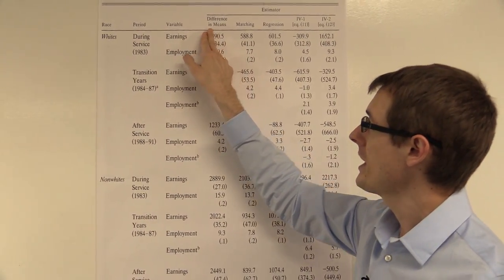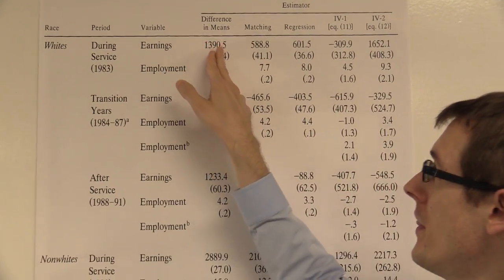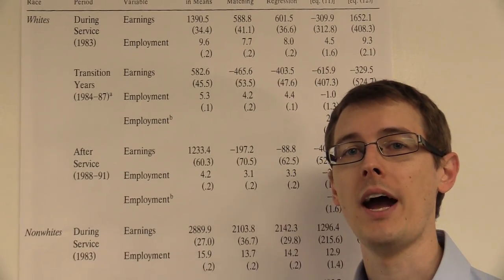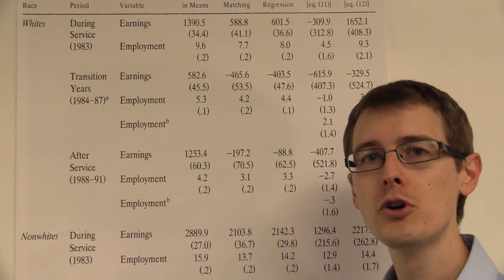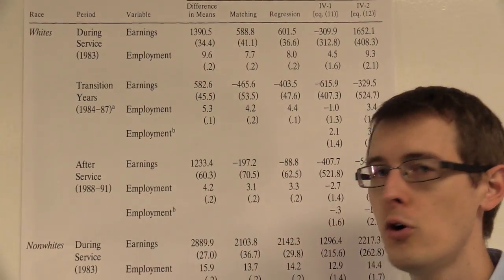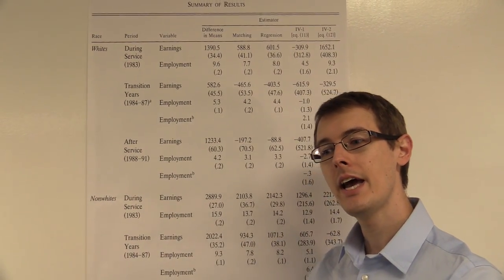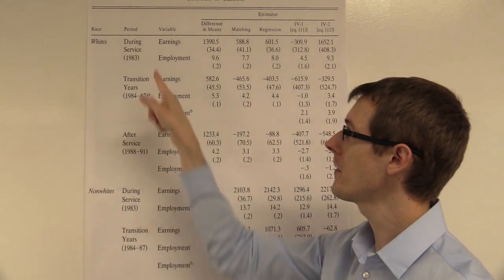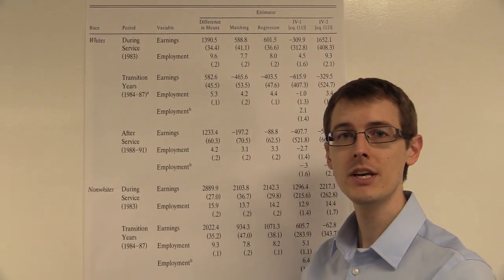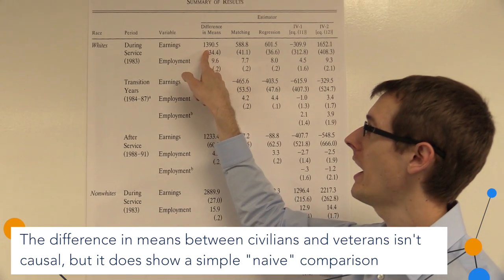So in the first column, he labels the difference in means. This is what we saw in the previous graph. This is just you take your two groups of people, for whites, who applied in 1982. You've got two groups, the ones who enlisted in the military and the ones who didn't. And then you look at the earnings of those two groups, take the difference, and that's what you've got here.